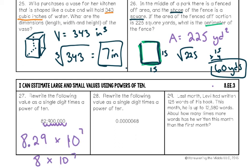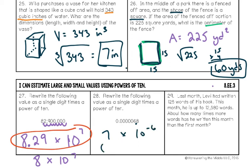Number twenty-eight: same process — move the decimal between the first two significant digits to get 6.8, then count how many places: six times. Since it's a very small number, the exponent is negative. Final answer: 6.8 times 10 to the negative sixth. If they asked you to estimate with a single digit, you could write 7 times 10 to the negative six — really small numbers get negative exponents.